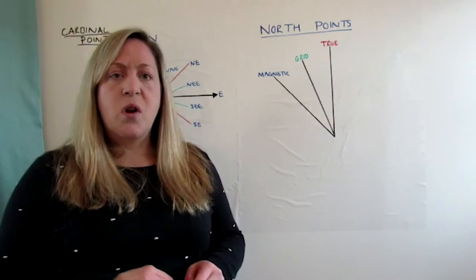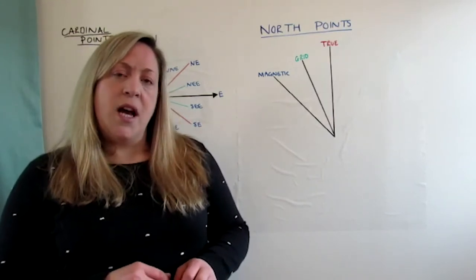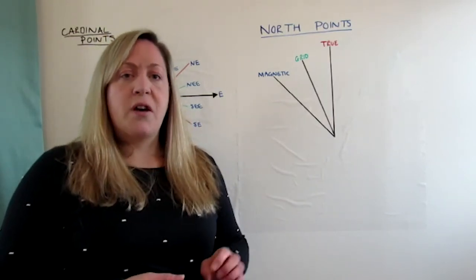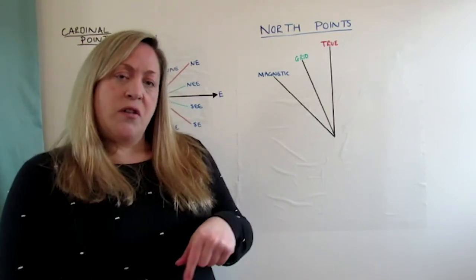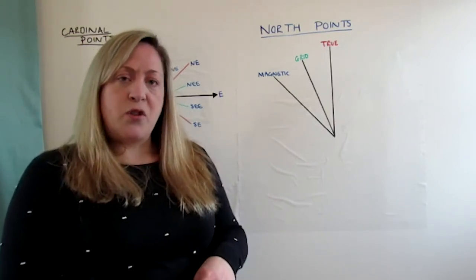Grid north is the vertical lines that lie on your map, and magnetic north is the north that the red end of your needle and your compass will naturally point to.